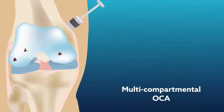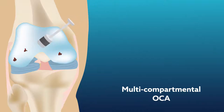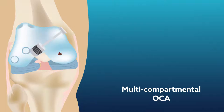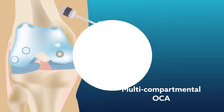The second method involved multicompartmental OCA. Patients undergoing this procedure had multiple osteochondral lesions. The main difference between this method and the SNOWMAN technique is that multiple compartments were grafted, and only a single dowel plug was put in place for each lesion.